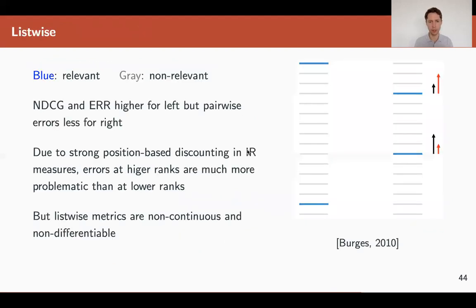That's why it hasn't been done for a while. And this very similar example to what we saw for the pairwise approach is from a seminal paper by Birch that discusses ranking and other similar methods. So basically, NDCG and ERR and user preference are higher for the left ranking, while the pairwise approach would prefer the right ranking.